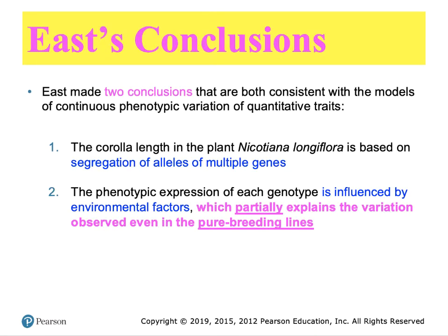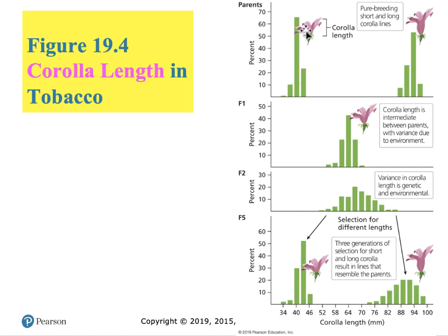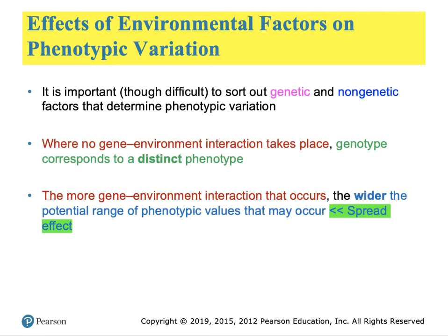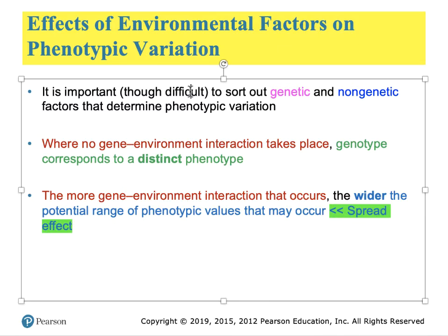From this research, East came up with two important conclusions. First, that the length of the corolla is controlled by multiple alleles of multiple genes. Second, and perhaps more importantly, phenotypic expression of corolla length was partially explainable by genetic variation but also had something to do with environmental factors. This is very obvious when looking at the parent data — even the pure-breeding short-corolla parents fell into a range, as did the long pure-breeding corolla parents.